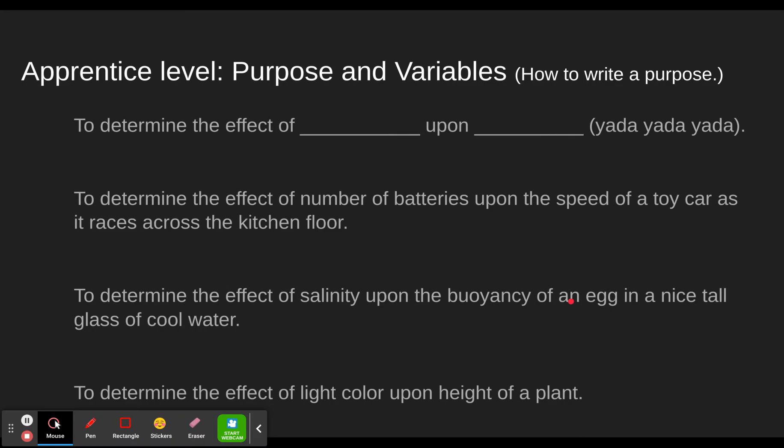All right, so in the apprentice level, we have sentences. This is basically how to write a purpose. So to write your purpose, the introduction to the lab, you state to determine the effect of, and then you put the independent variable here. I'm going to abbreviate it the independent variable upon the dependent variable, and then yada yada yada. They might have other stuff there to explain that.